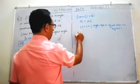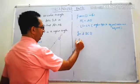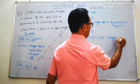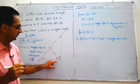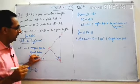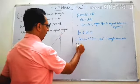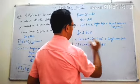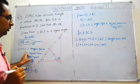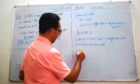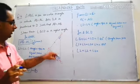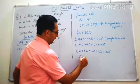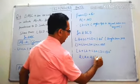In triangle BCD: angle B + angle C + angle D = 180° (angle sum property). Angle C = angle 2 + angle 3, angle B = angle 1, angle D = angle 4. Since angle 1 = angle 2 and angle 3 = angle 4: angle 2 + angle 2 + angle 3 + angle 3 = 180°, so 2×angle 2 + 2×angle 3 = 180°.